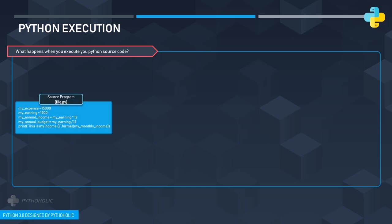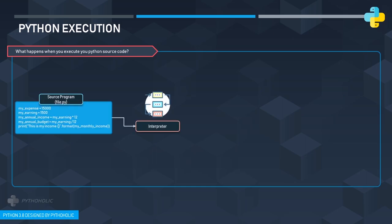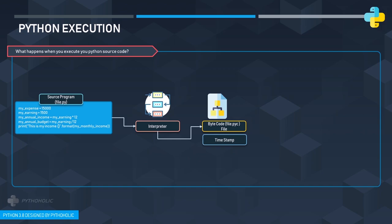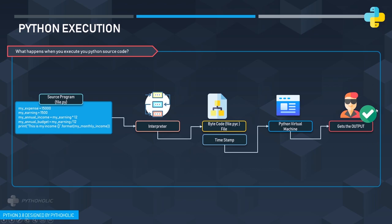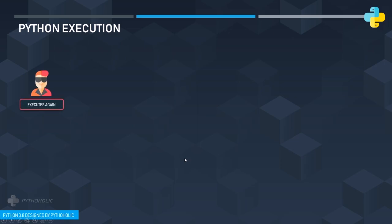When you execute your Python source code — the .py file — the first phase of the interpreter generates the byte code, which is the .pyc file, along with a timestamp of when the byte code was created. This byte code is then fed to the Python virtual machine, which executes the program and gives you the output. That is how a simple Python execution cycle looks on a high level.